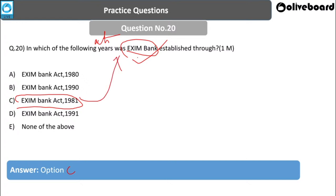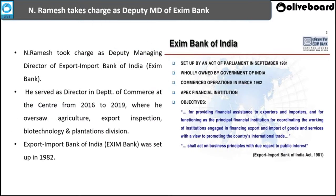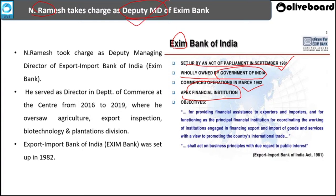EXIM Bank commenced operations in 1982 and is the apex financial institution for exports and imports in the country. It was in the news recently because Mr. N. Ramesh took charge as Deputy Managing Director of EXIM Bank, having previously served as Director in the Department of Commerce. EXIM Bank provides financial assistance to exporters and importers and functions as the principal financial institution coordinating all institutions in the domain of export-import business.